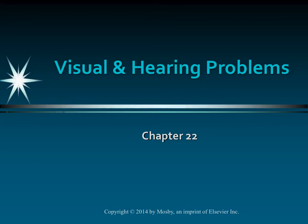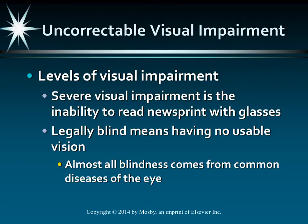We are starting on page 388 under uncorrectable visual impairment. There are millions of people in the United States that can't even read a newspaper, even with glasses. We categorize the level of visual loss, such as total blindness, where there's no light perception at all and no usable vision, versus functional blindness when there is some light perception but still no usable vision.